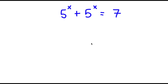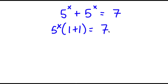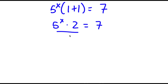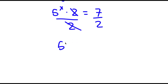In this problem, I have 5 to the power of x plus 5 to the power of x is equal to 7. To start, I'm going to factor out 5 to the power of x from the left-hand side. So now I have 5 to the power of x times 1 plus 1 is equal to 7. Now 1 plus 1 equals 2, so I have 5 to the power of x times 2 is equal to 7. Dividing both sides by 2, I get 5 to the power of x is equal to 7 over 2.